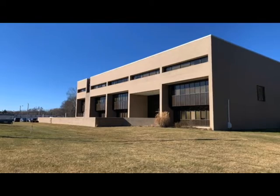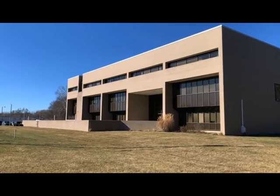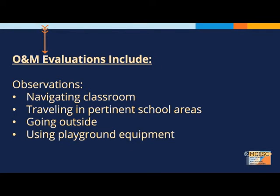The O&M assessment typically occurs within the child's current school building, but on some occasions the child is brought to the regional center in order to be assessed. The assessment includes observing the child navigating within their classroom, walking in the school building to pertinent areas where they travel regularly, going outside on school grounds, and using the playground equipment, weather permitting. The child is asked to participate in one or more visual scanning, spotting, and tracking activities, such as playing with a high contrast ball or perhaps playing a game of eye spy when walking in the hallways.